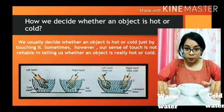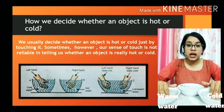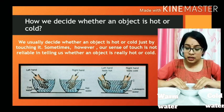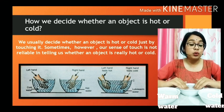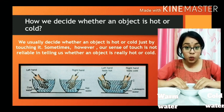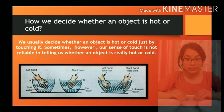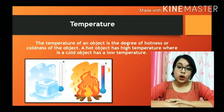My right hand is feeling warm and my left hand is feeling cold. Now I will dip the fingers of both hands into the middle bowl, where the water is at normal tap temperature. When I dip my fingers there, my right hand says the water is cold, but from my left hand I feel the water is warm. So which hand is the liar? I want you to perform the same experiment at home — please comment and tell me what you observed. From this experiment we understand that only by touching we cannot say whether an object is hot or cold; we need to know the temperature.